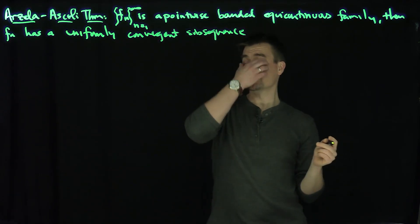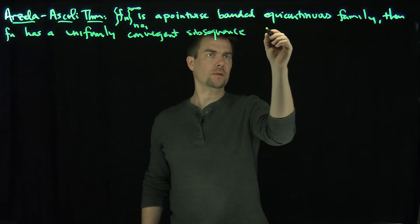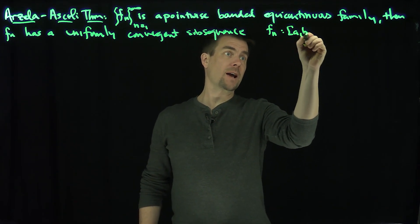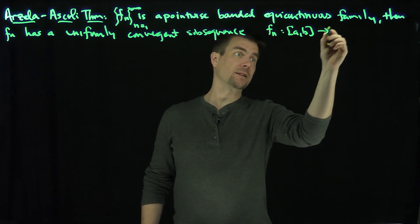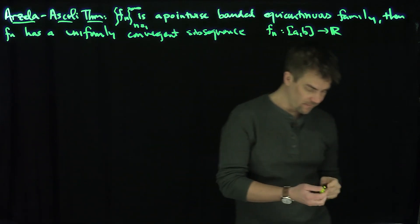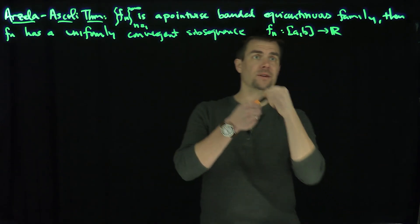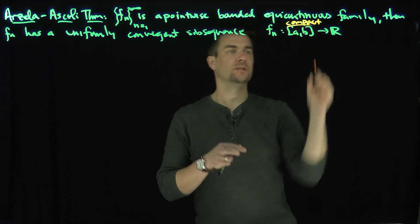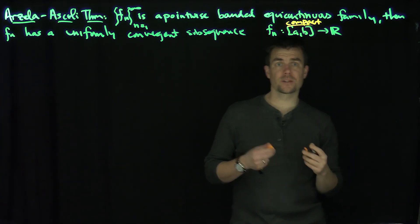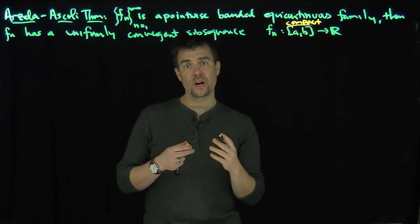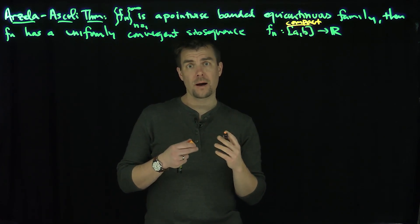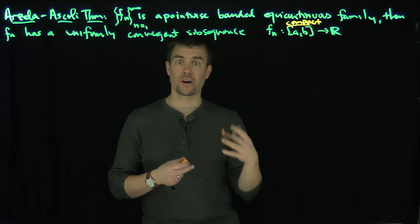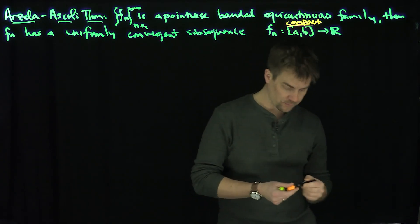The Fn's are defined on a compact set. The important assumption is that Fn are going to map [a, b], a compact set, into R. So that's a very important assumption of the Arzelà–Ascoli theorem: this set has to be compact. The theorem works for more general metric spaces over a compact set, so it actually generalizes quite a good deal. I'm just going to prove it on R though.